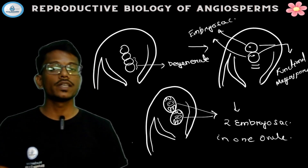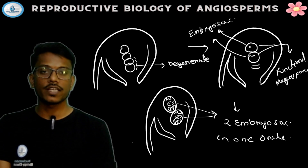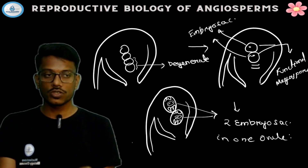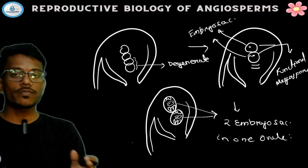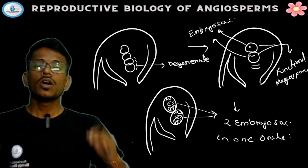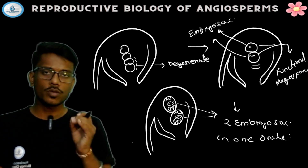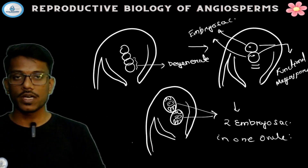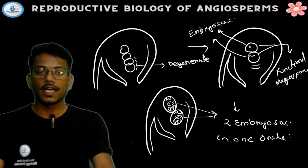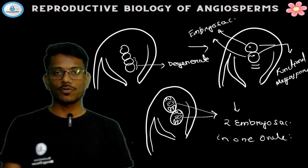So that is the concept of multiple embryo sac in reproductive biology of angiosperms, which we have discussed in this class. If you have any doubt, you can write in the comment section. Whatever I write and say during the class, you should write in your copy — that will be a very good note for all of you. Please like, share, and subscribe to our channel. Thank you.